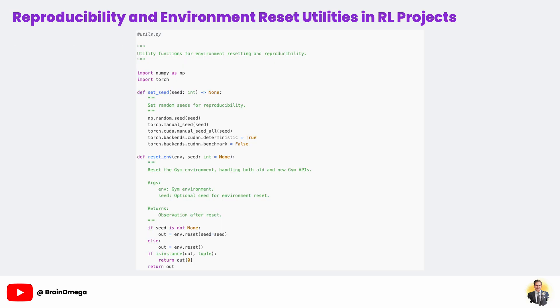In this part of the code, we're looking at two foundational utility functions that support the integrity and robustness of our reinforcement learning experiments. The first function, setSeed, is all about reproducibility.